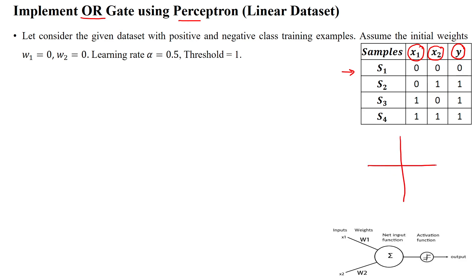Based upon this, we have to check if the data is linearly separable or not. (0,0) is the negative class, and the remaining three are positive class samples: (0,1) is positive, (1,0) is positive, and (1,1) is also positive class. We check if it is linearly separable — yes, it is linearly separable, so we can go forward.